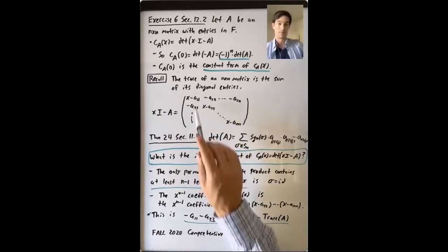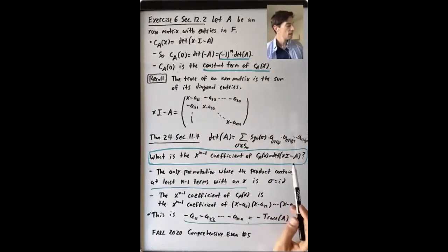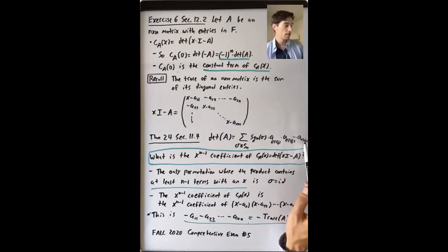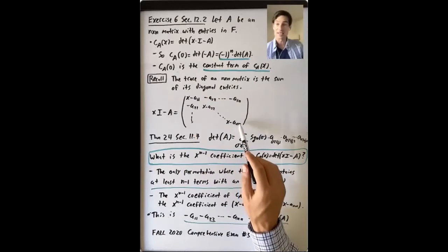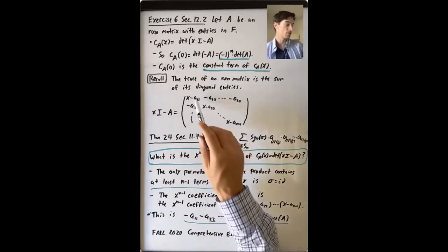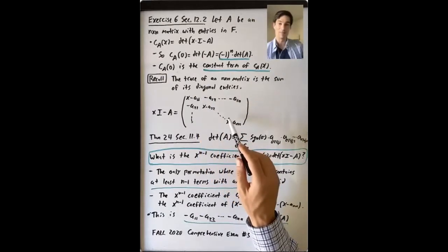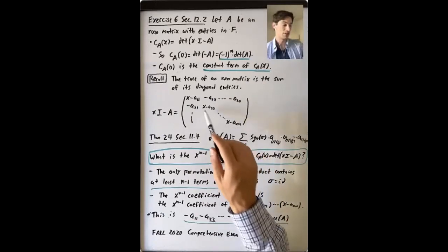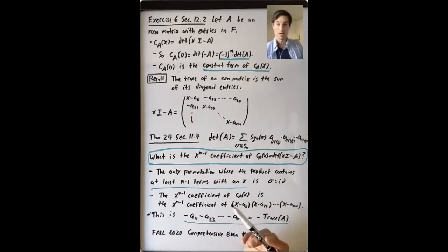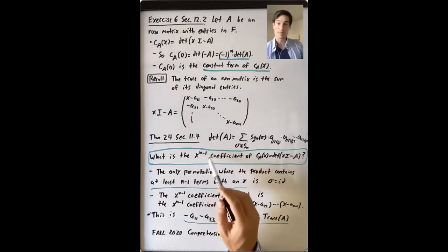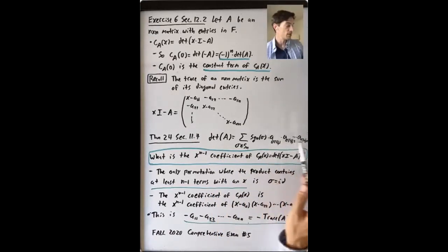You always have one entry from each row and column in the product. If you want to get a term that has X^{n-1} in it, then in that product of n things, you need at least n minus 1 terms that have an X in them. But every term comes from its own row and column, so you need at least n minus 1 things on the diagonal. If you've already chosen n minus 1 things on the diagonal, there's a unique row and column left — the last diagonal entry. So the only permutation where the product contains at least n minus 1 terms with an X is the identity permutation.